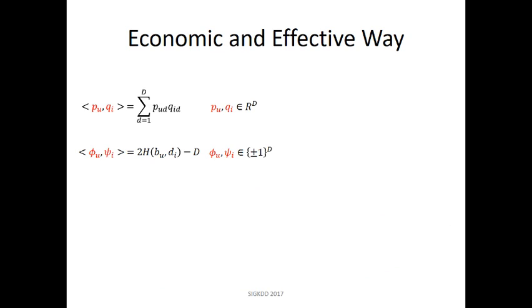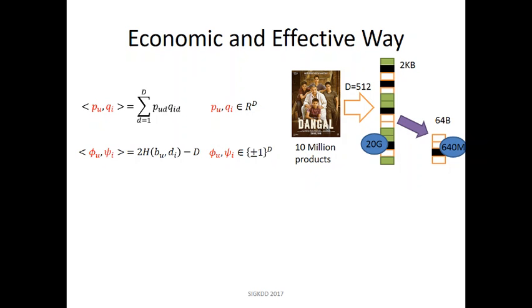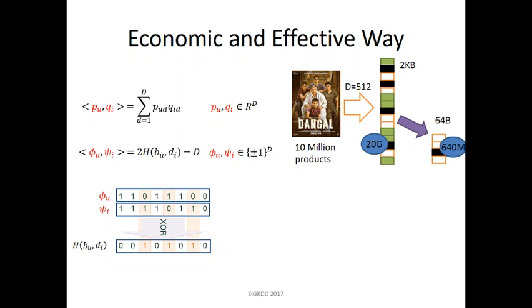When using binary code representing users and items, we can save memory consumption a lot. For example, 10 million products would occupy around 20 gigabyte space when using continuous latent factor, and around 640 megabyte space when using binary latent factor. In addition, we can fast compute user preference for items by XOR based on Hamming distance.